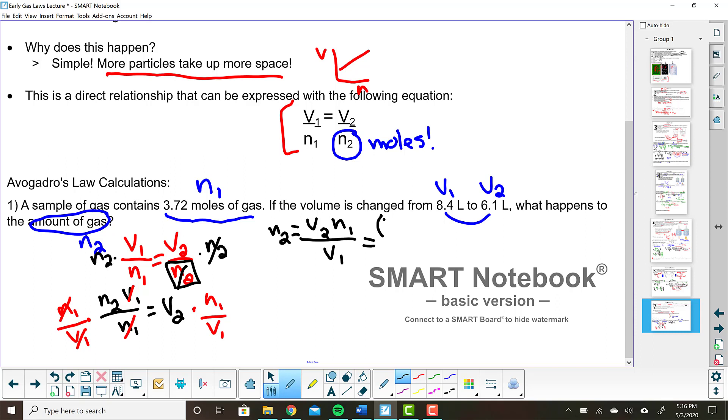So volume 2, 6.1 liters times N1, 3.72 moles divided by volume 2, which is divided by volume 1. Man, I've got to watch those subscripts, guys. Sorry. 8.4 liters. And the liters are going to cancel out, which is good because I want to solve for moles. And when I plug this into my calculator and use sig figs, I get 2.7 moles, which we predicted, right? We said that the volume went down. And so if the volume goes down, the number of moles also has to go down. And it did. It went from 3.72 to 2.7 moles.